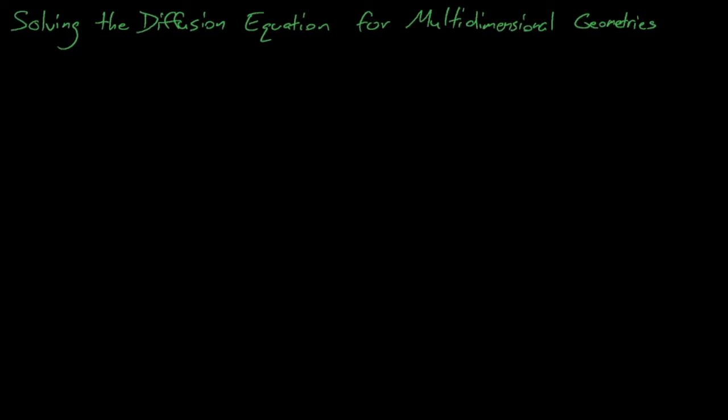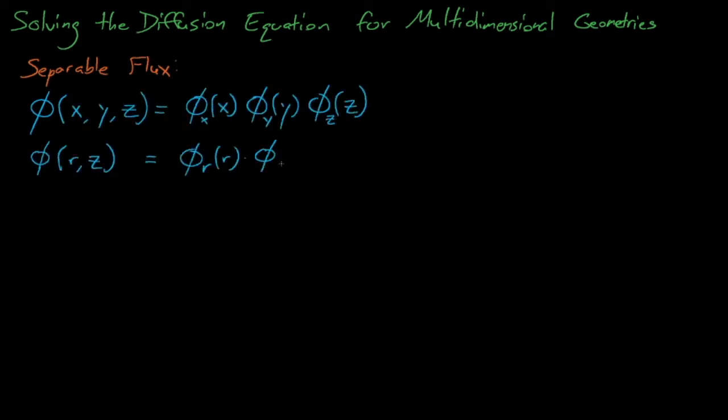Today we're going to extend this analysis to any multidimensional spherical, cylindrical, or Cartesian system. When we apply the diffusion equation to these systems, we'll assume that the flux is separable across dimensions. We made a similar assumption in the last lecture, where we assumed that the time-dependent flux could be split into a time-dependent P of T component and a spatially-dependent flux-shaped function.